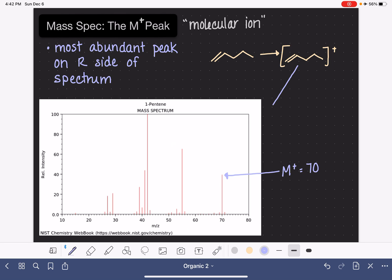We talked about this in the last video. Those cations that make it all the way through the instrument are the ones that are picked up and detected and recognized as the M plus peak. So 70 is what corresponds to the molecular weight of this particular molecule. Molecular weight or molar mass or whatever term you would like to use.